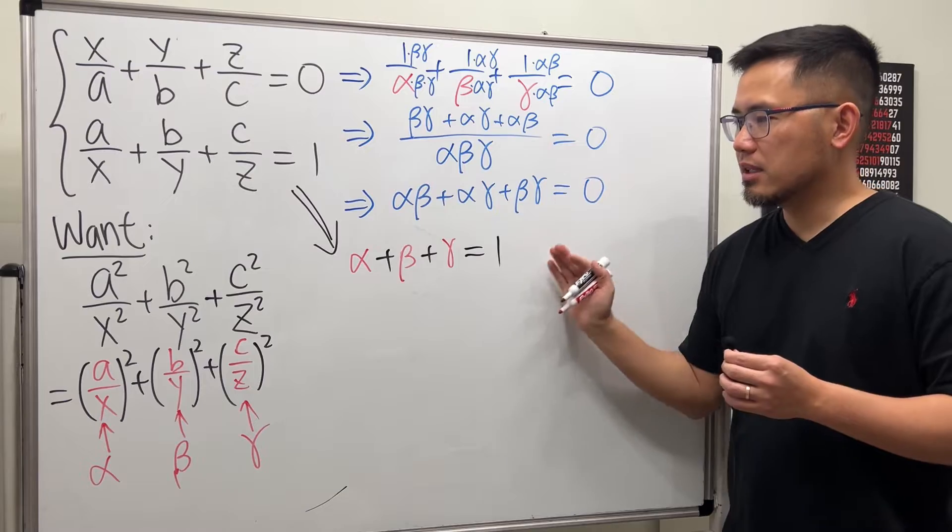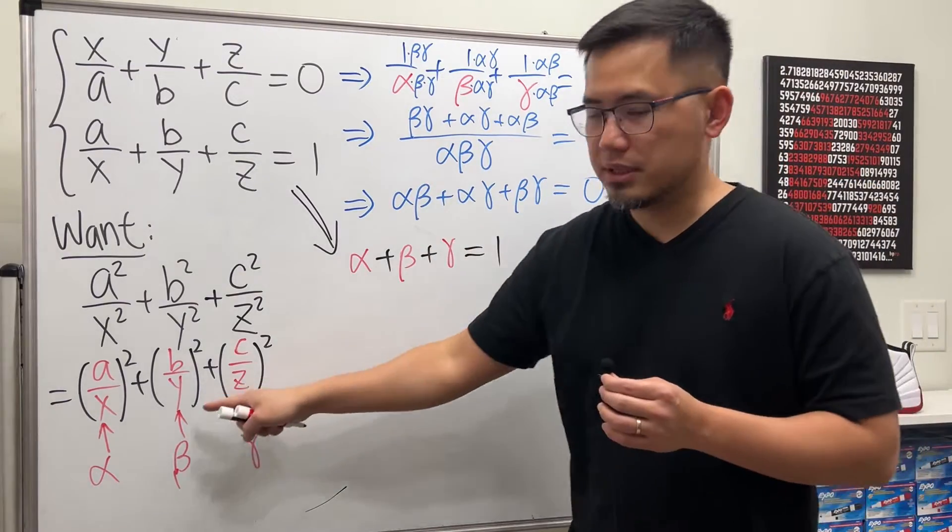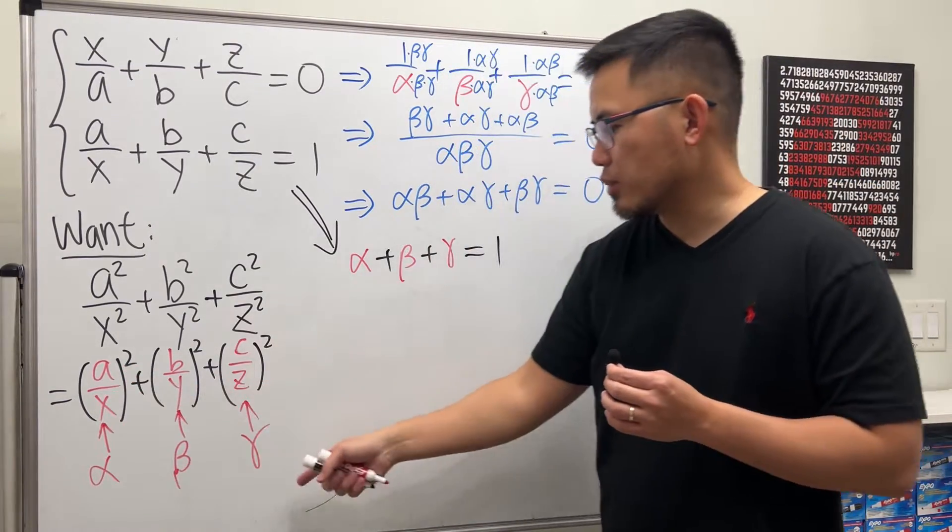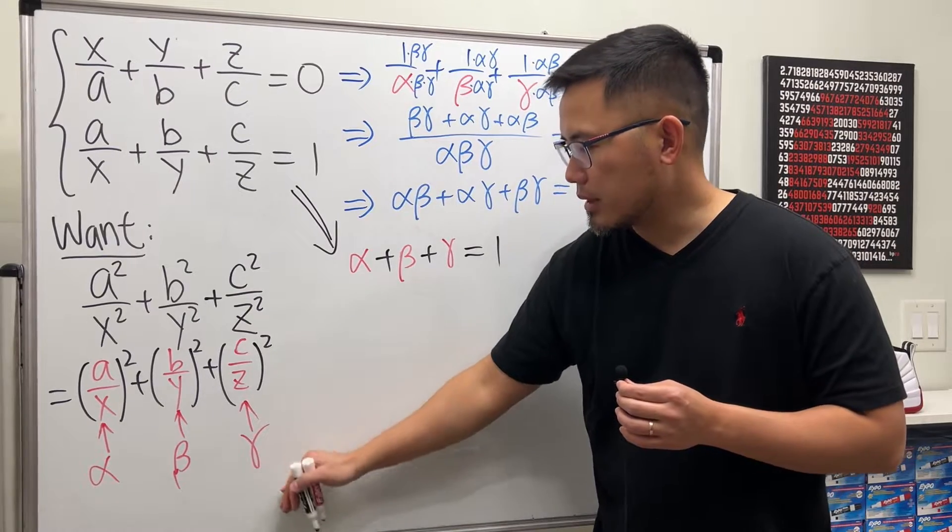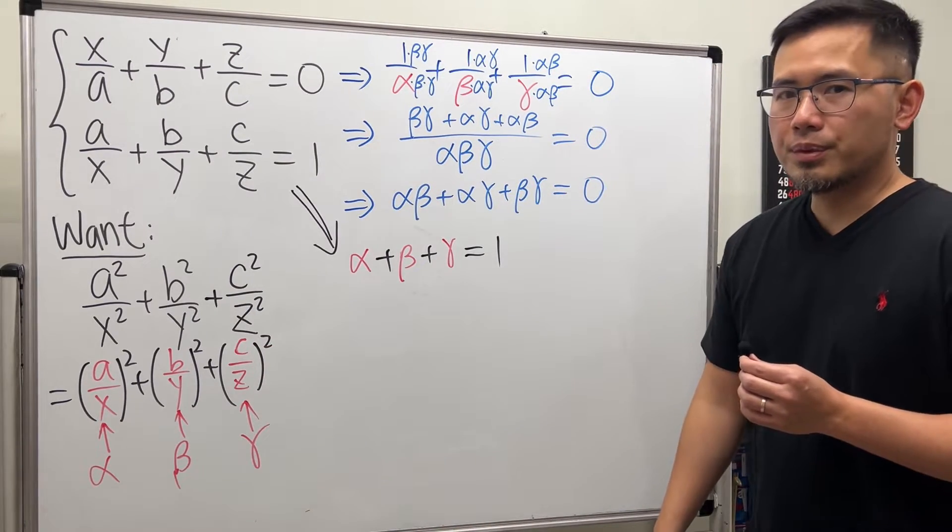So we have this and that. And we are trying to produce this. Right? Alpha squared plus beta squared and then gamma squared. So what can we do?